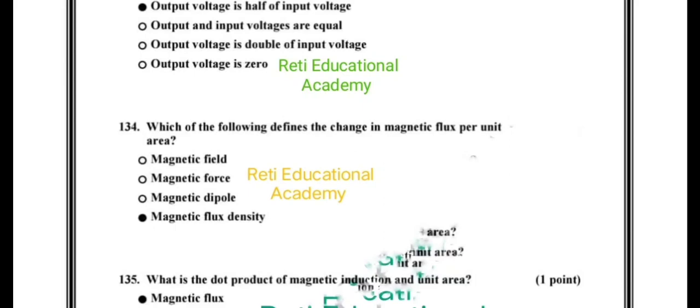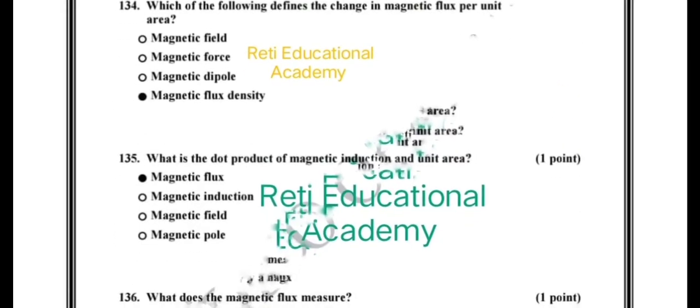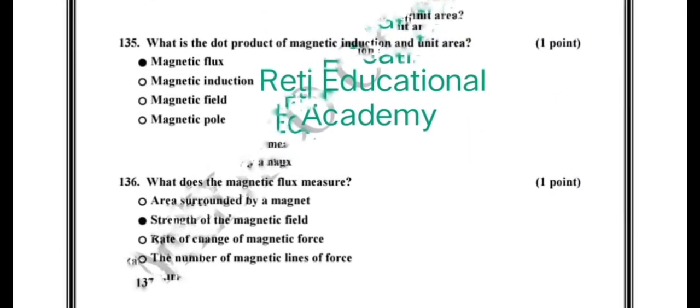The correct option is magnetic flux density. Question number 135: What is the dot product of magnetic induction and unit area? The correct option is magnetic flux. Question number 136: What does the magnetic flux measure?